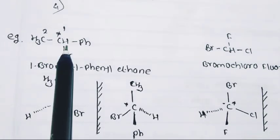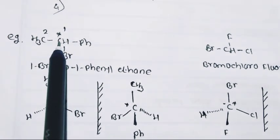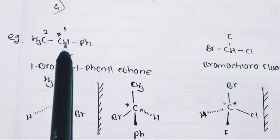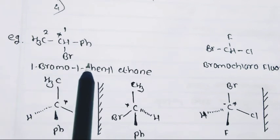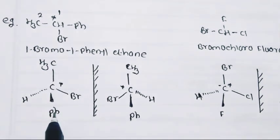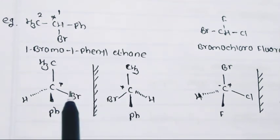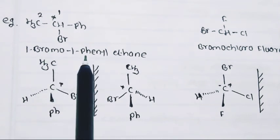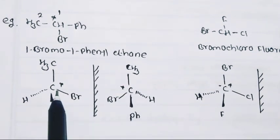Second example of optical isomerism: CH3CHBrPh — 1-bromo-1-phenylethane. In this structure, carbon number 1 is attached to four different groups: hydrogen, phenyl (Ph), bromine, and CH3. Therefore it is a chiral molecule, and it is a non-superimposable mirror image of each other — both are not identical.